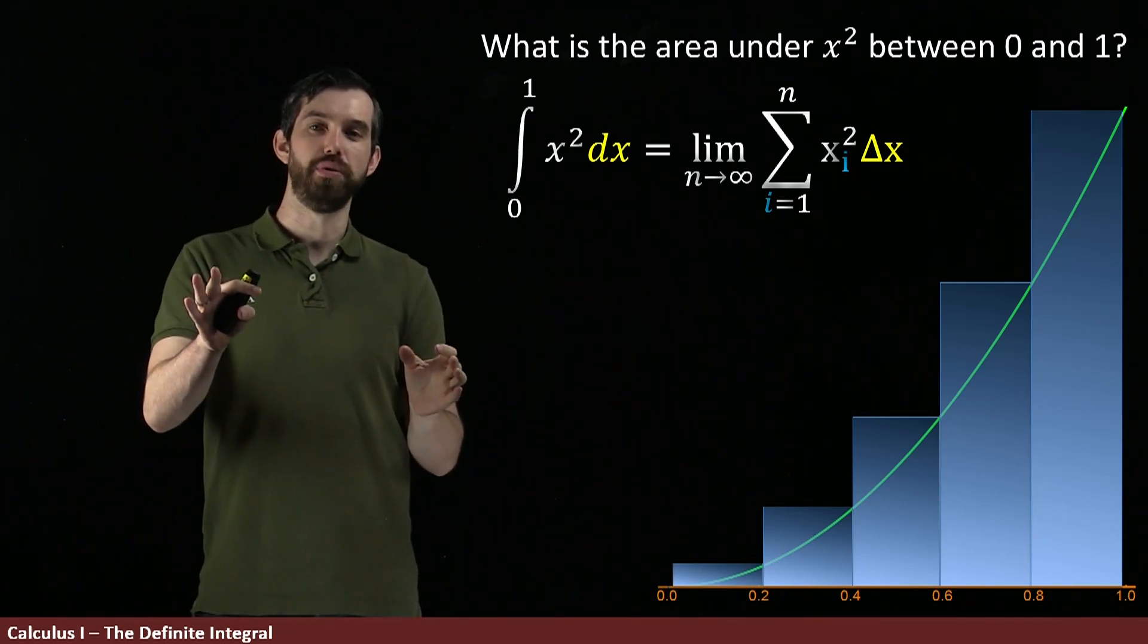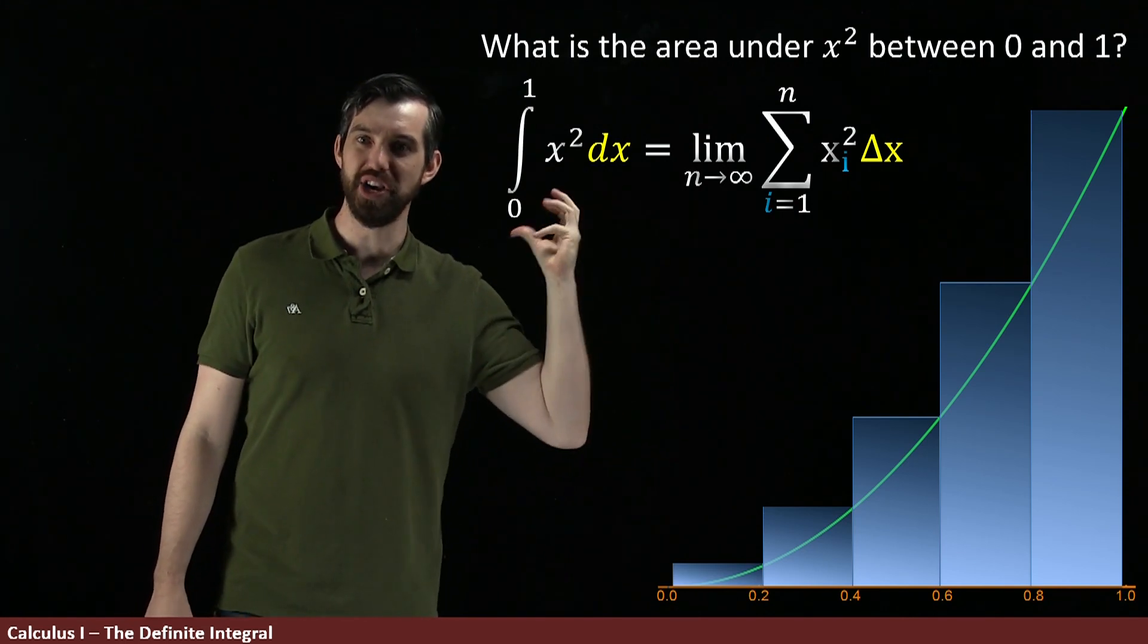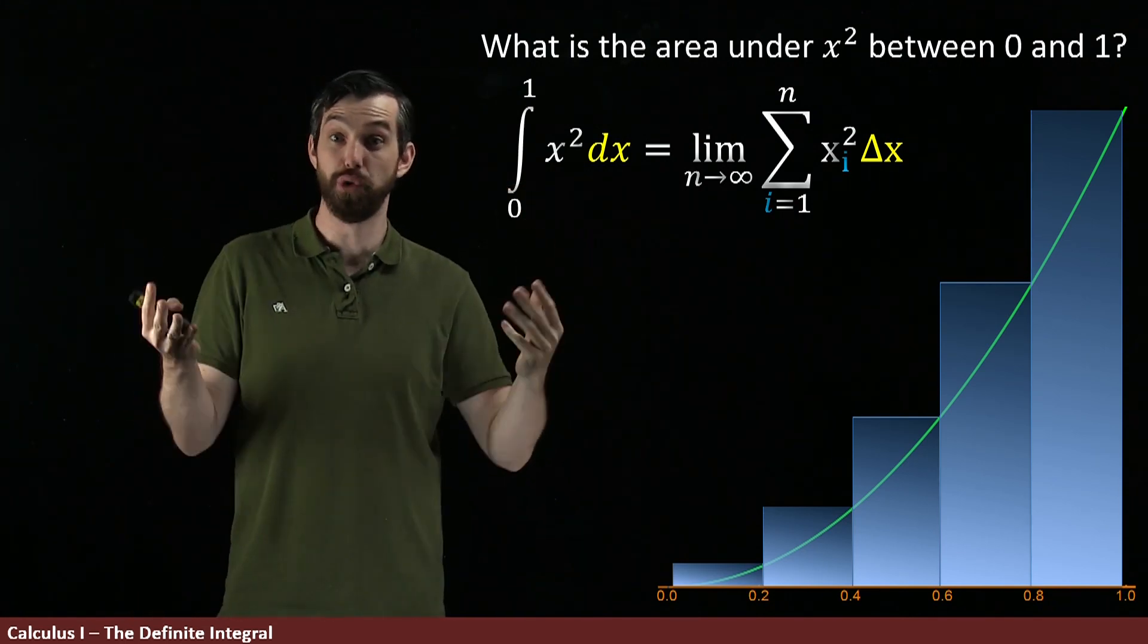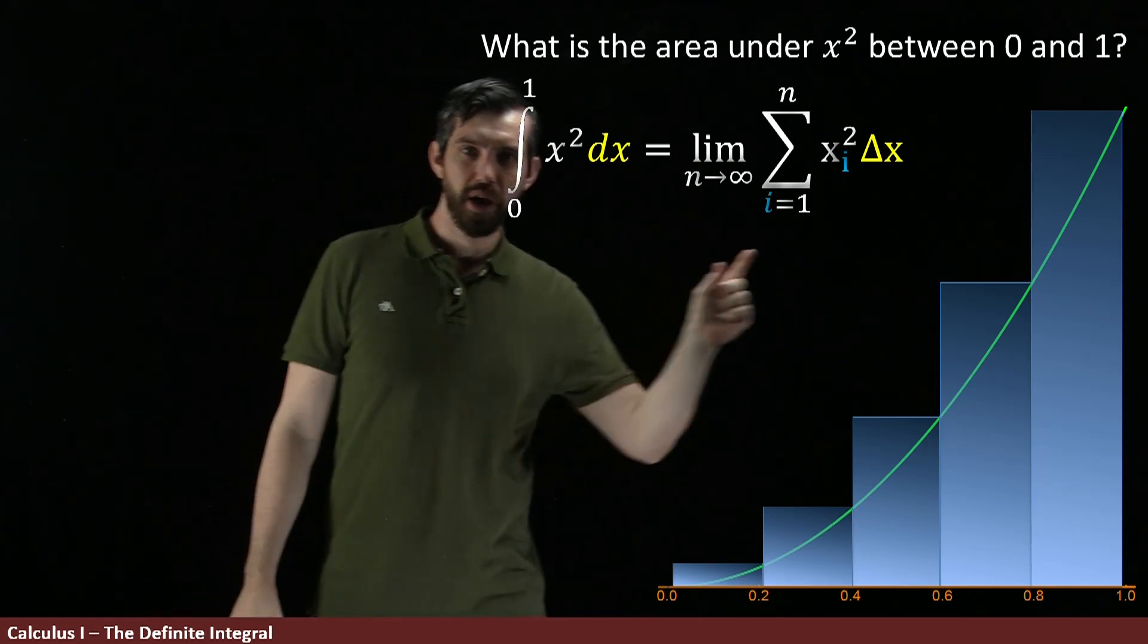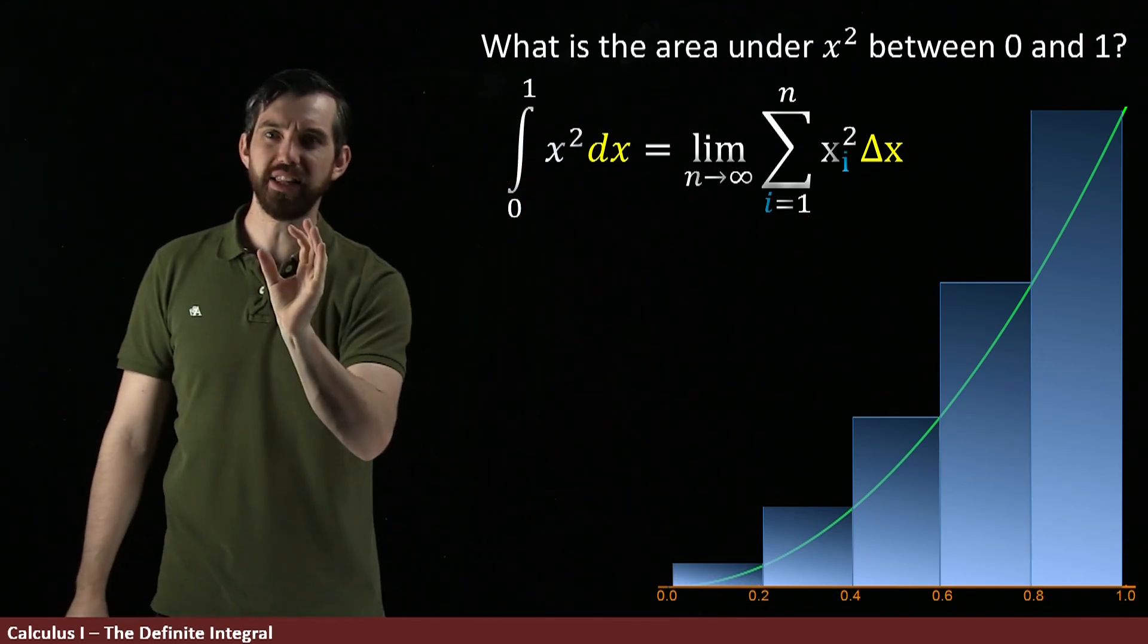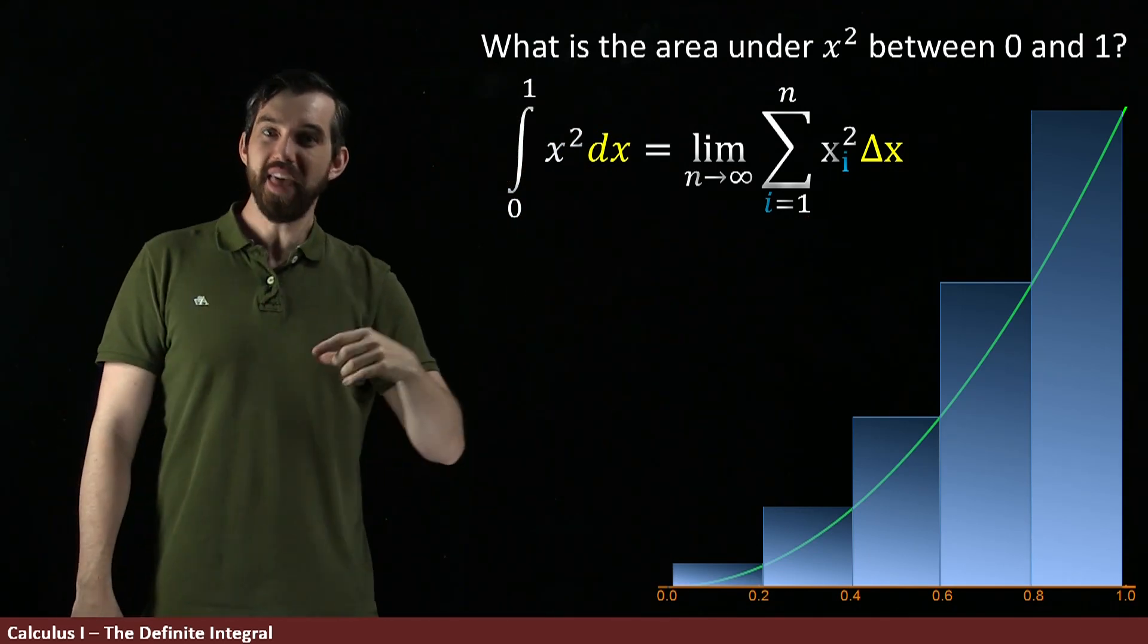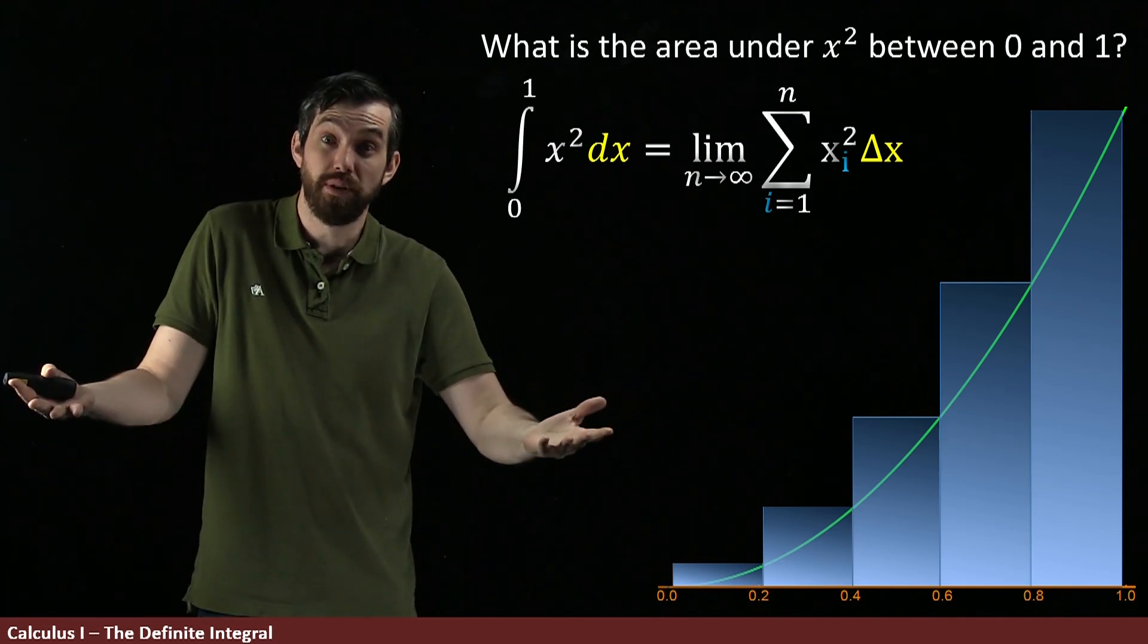And what I need to do to actually compute this thing, to actually make this thing be a number like 7 or 2 or whatever the number's going to be, is I need to determine what is the delta x, I need to figure out what exactly are the xi's, and then I hopefully will result in some sum that we're actually able to compute.